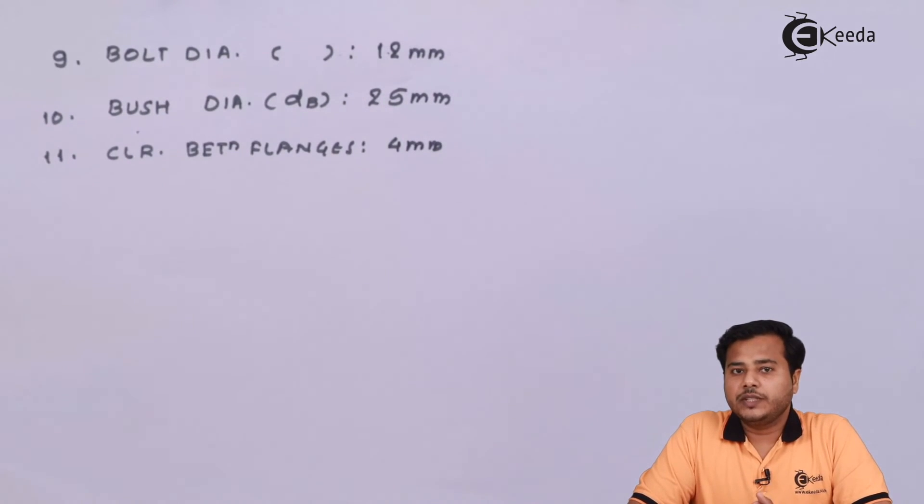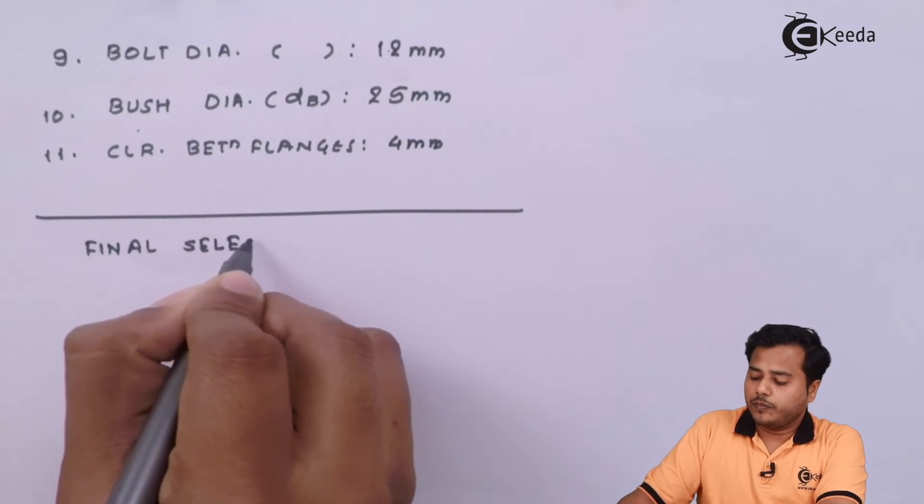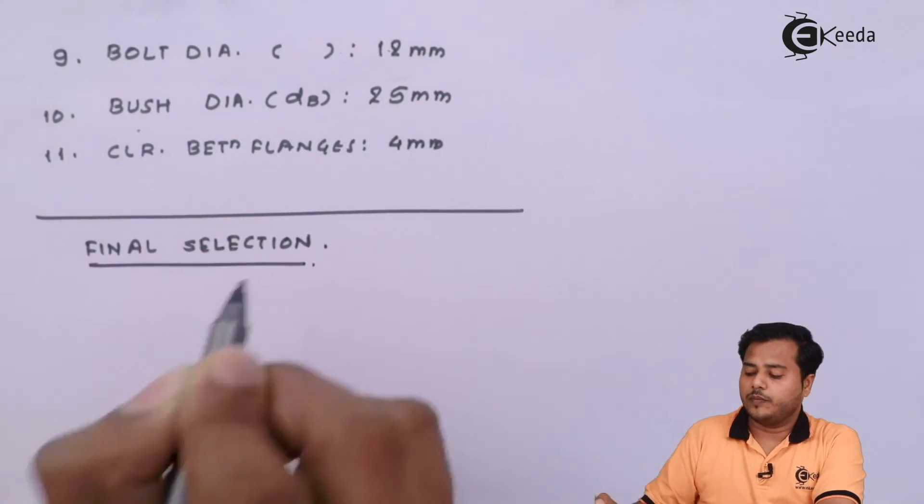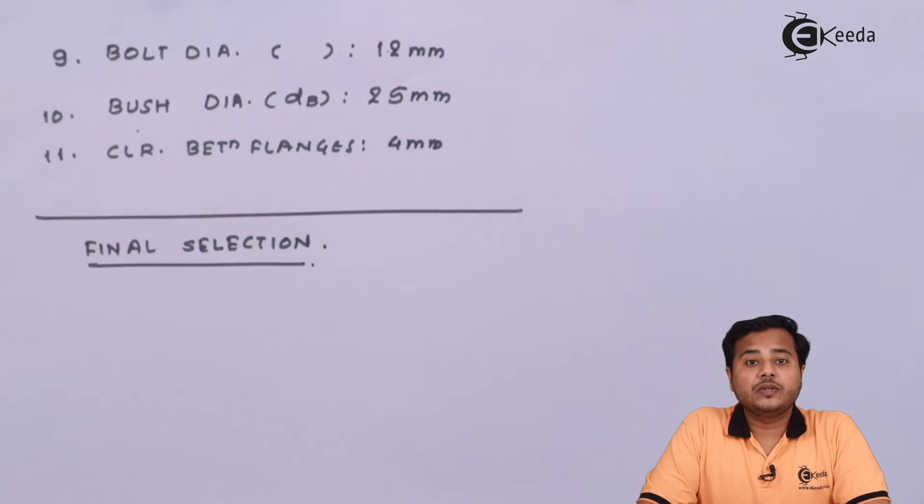So with this particular selection of the coupling let us go ahead with provision of the safety procedure check. So we'll see that whether the selected flange, selected coupling and all other parameters are going to be safe or not in this case. So this was from my side in this video. In the next session we will see whether the parameters are going to be safe or not. Thank you so much for watching this video. If you like this video please subscribe to Ikeda. Thank you.